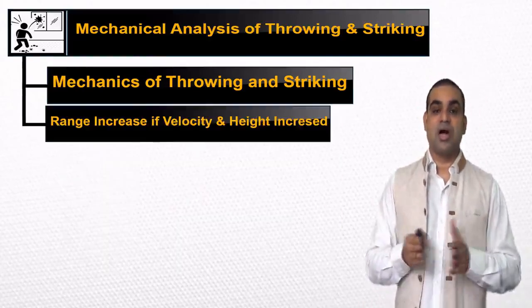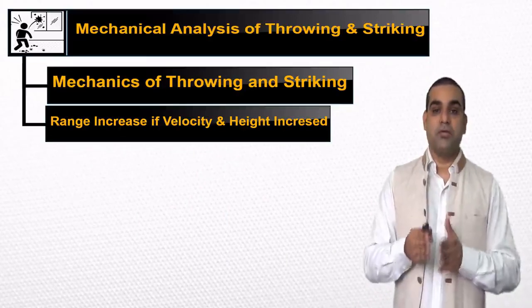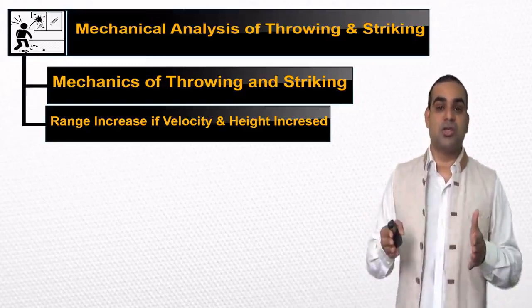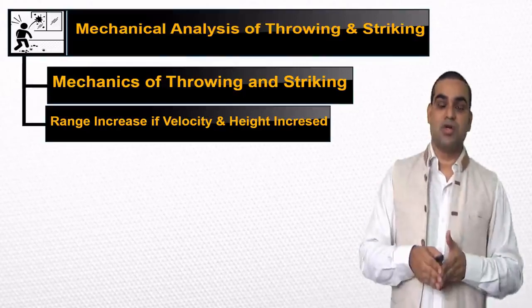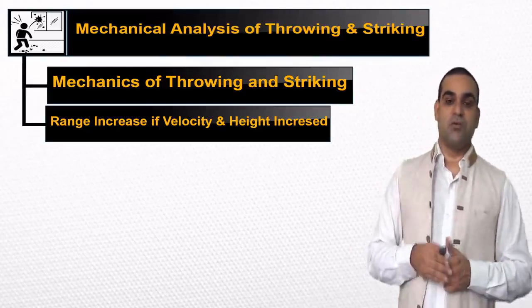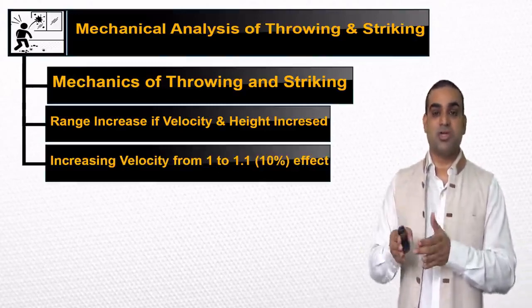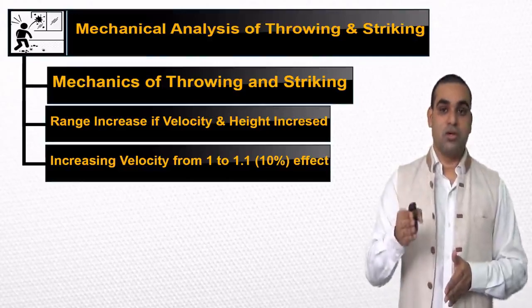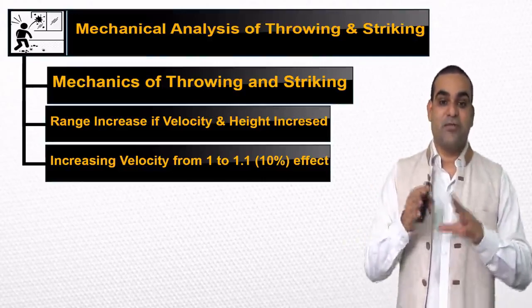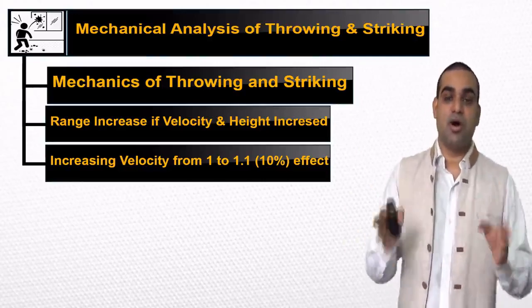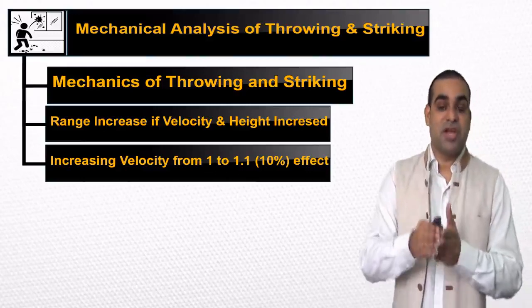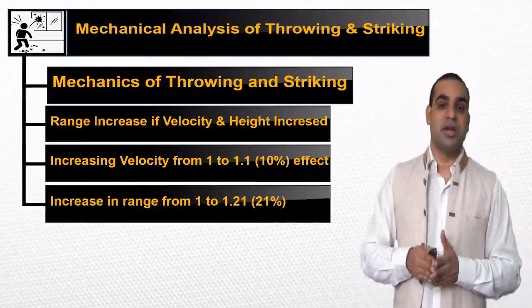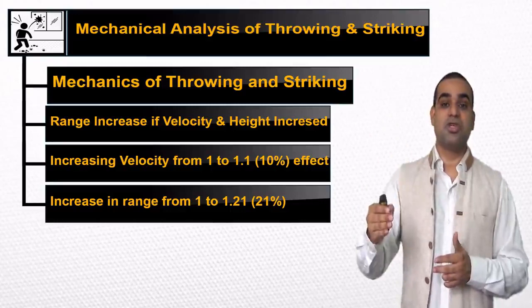Distance can be obtained by the combination of the magnitude and direction of velocity. The range gets increased — joh parash hai, wo increase hota hai — if both the velocity and height get increased. The increased velocity from 1 to 1.1, that is 10 percent, has an effect — wo prabhav deta hai — such that the range gets increased by 1 to 1.21, that is 21 percent, because the velocity has been squared. So the important factor here is to increase the magnitude of velocity.